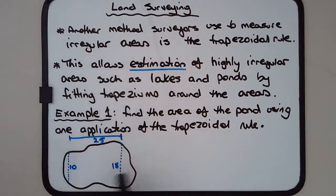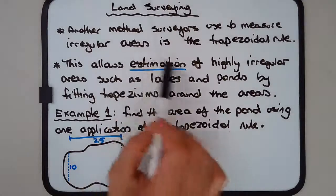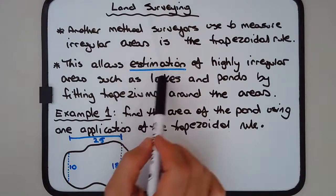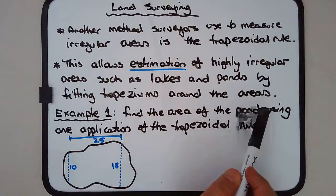Lakes and ponds and parks and those sort of organic type areas where they're all fairly random with no straight edges or random curves, we need to estimate it somehow. I'll stress it's an estimation, so it's not going to be exact. We can fit trapeziums around these areas.